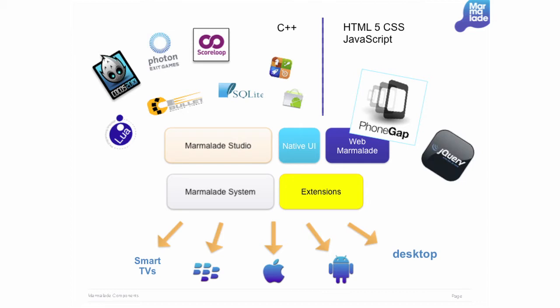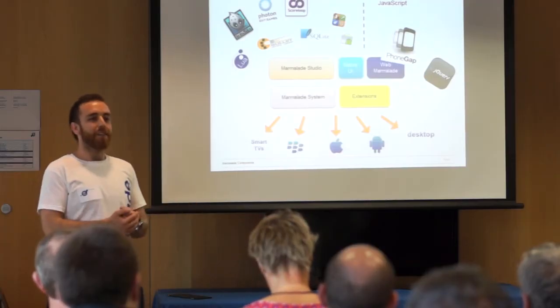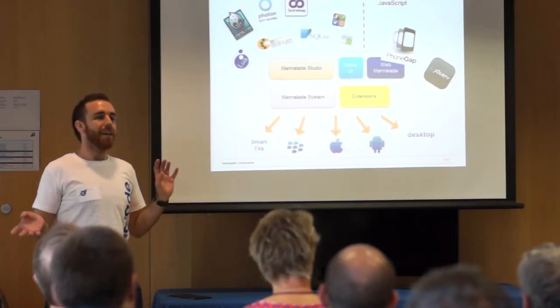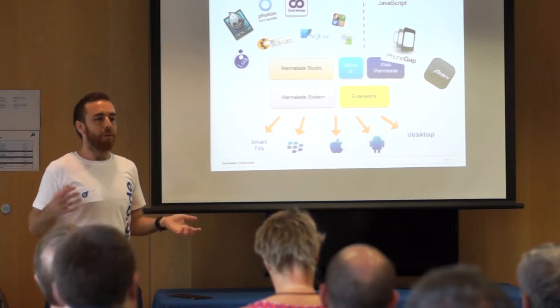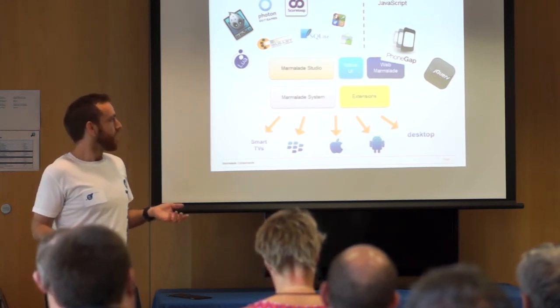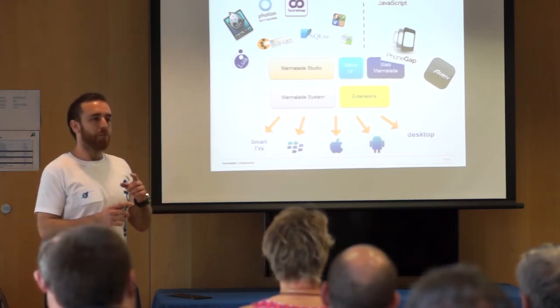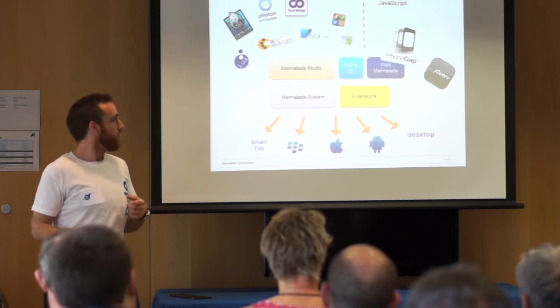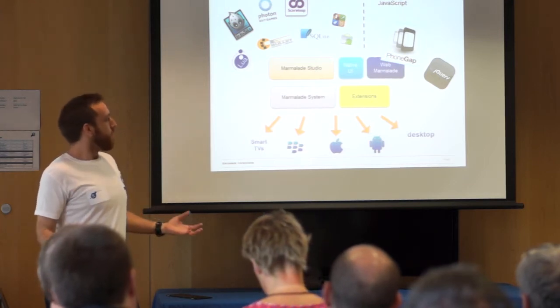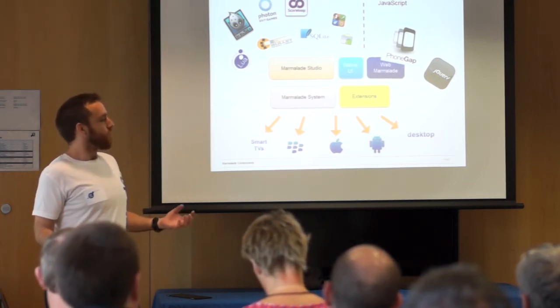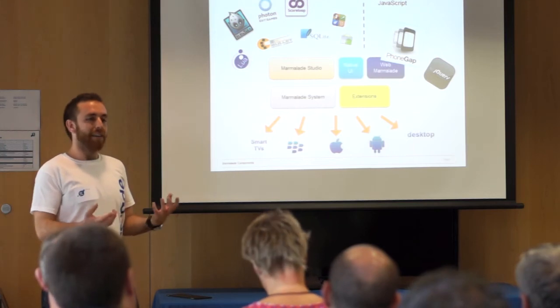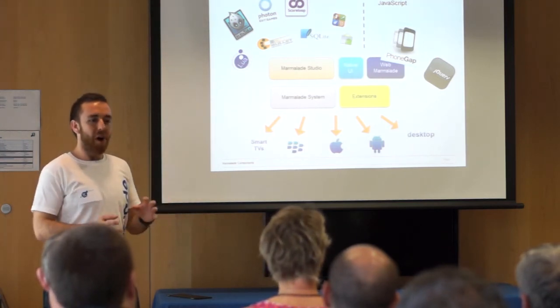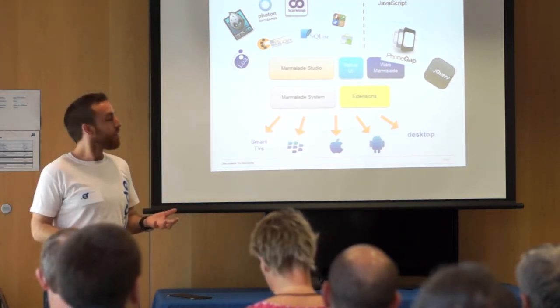Obviously other JavaScript libraries like jQuery work too. The big thing we're doing with 6.1 is to remove the separation between two different SDKs — one for web and one for native tech — giving you access to calls straight between the C++ and JavaScript worlds. Going forward, Marmalade 6.1 is a truly native and web hybrid environment for building any kind of app you want.